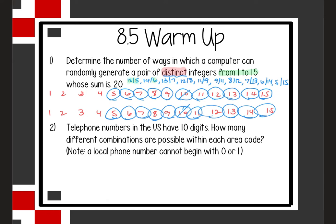So we count these: 1, 2, 3, 4, 5, 6, 7, 8, 9, 10 — there are 10 different ways that a computer can randomly generate a pair of distinct integers whose sum is 20.